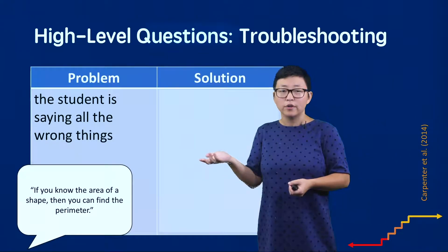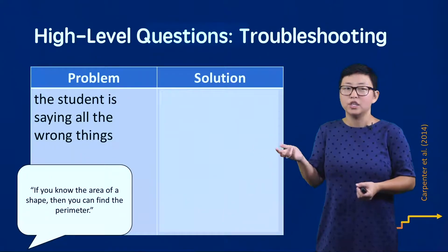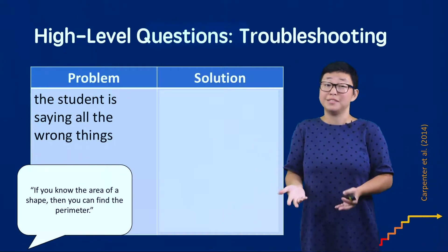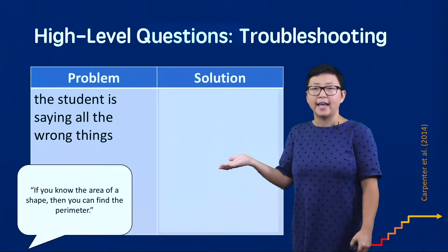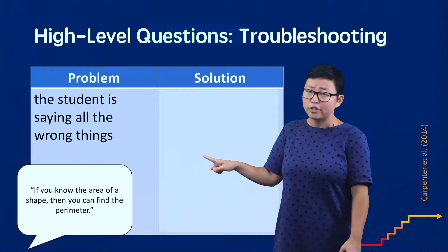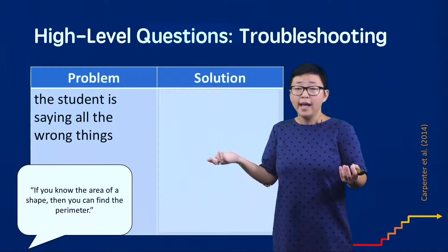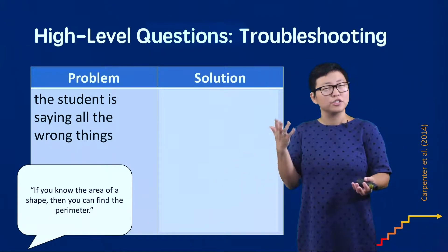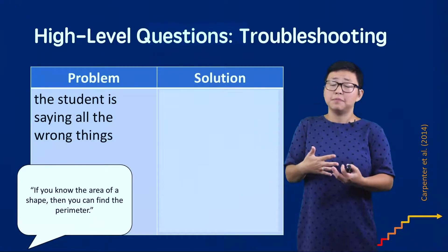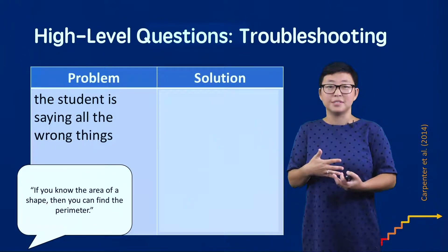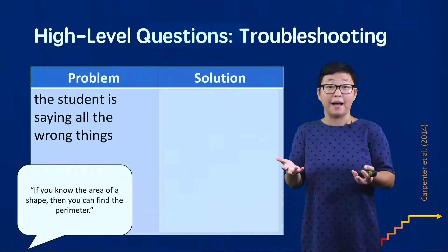Another area that might be a barrier to asking a high-level question is that you might feel a little uncomfortable if students say the wrong things. A student might say, for example, if you know the area of a shape, then you can always find the perimeter. That's just a really interesting observation a student might make, but sometimes teachers feel uncomfortable when students say these wrong things because they're not quite sure how to respond.